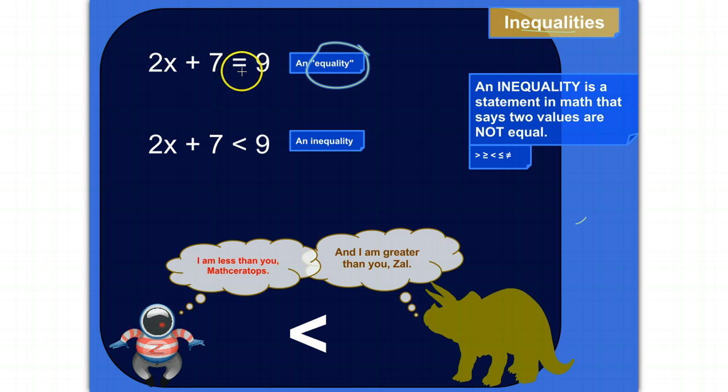For example, in this equation, all this really means, what this symbol means is, whatever the value is of all this junk over here, it's the same value of all this junk over here.